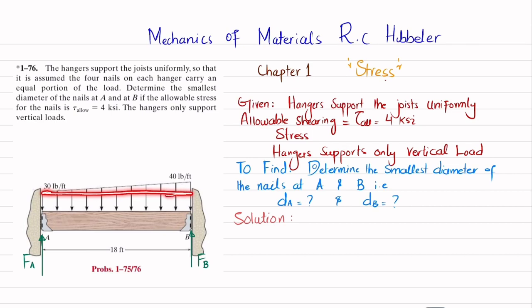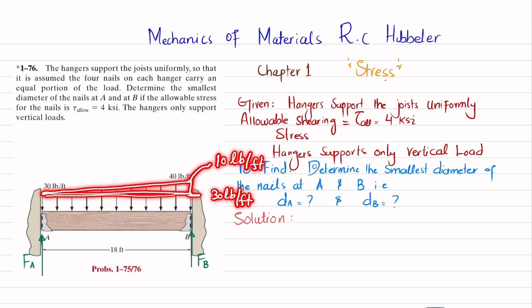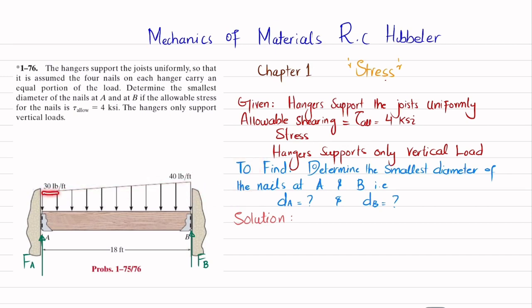The loading is mixed, so we will convert it into a distributed load plus a triangular load. The distributed load will have a magnitude of 30 pounds per feet, while the triangular load will have a magnitude of 40 minus 30, which equals 10 pounds per feet. Taking a horizontal line, you can see the distributed part and the triangular part with magnitude 10 pounds per feet.